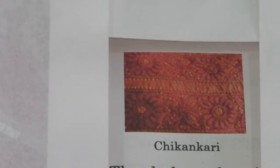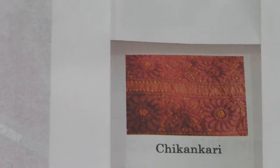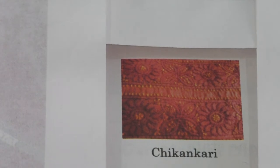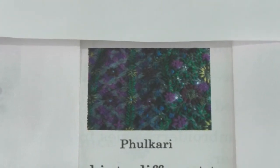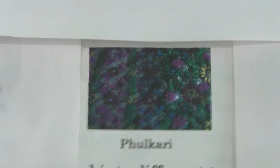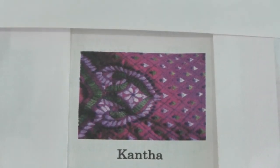The types of embroidery vary from one state of India to another. Here you can see the image of Chikankari, which is of Uttar Pradesh. What you see is Phulkari of Punjab, and this is Kantha of West Bengal. The cloth can also be stitched into different types of garments, for example, salwar suits and kurta pyjamas.